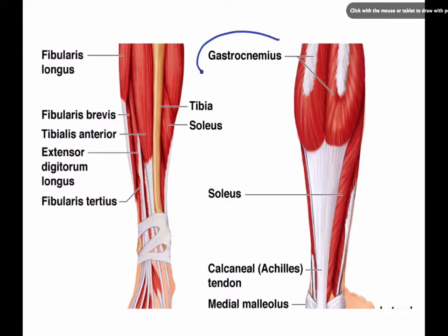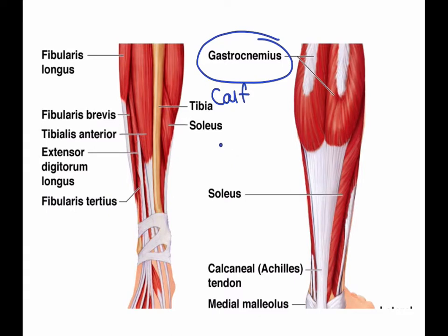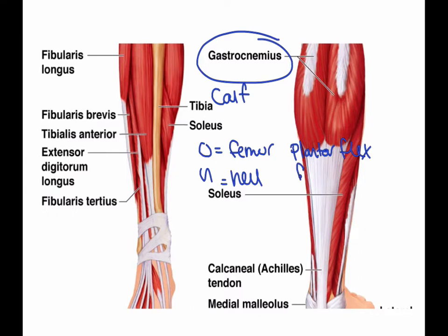Next up we have the gastrocnemius, also movement at the foot. This is going to form the curve of the calf — your calf muscle. The origin is the femur, the insertion is the heel, and it will help to plantar flex the foot and also flex the knee.